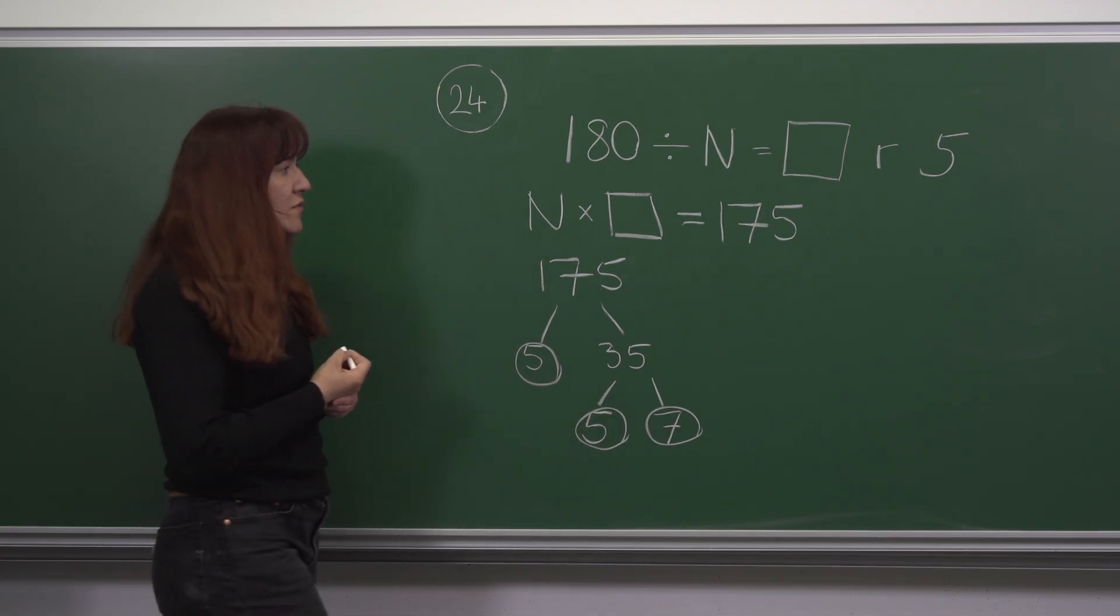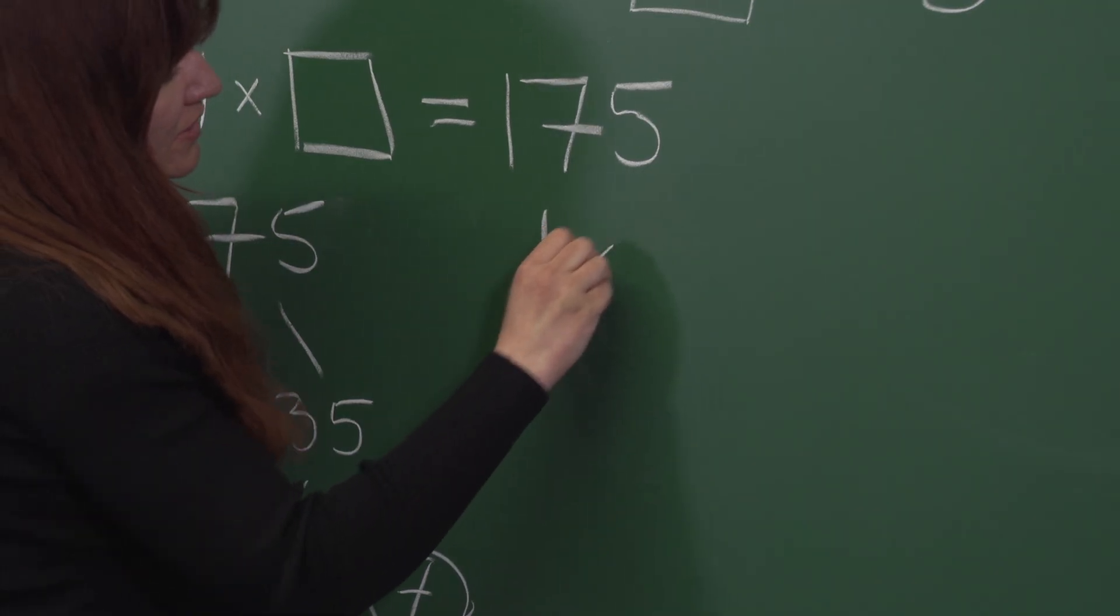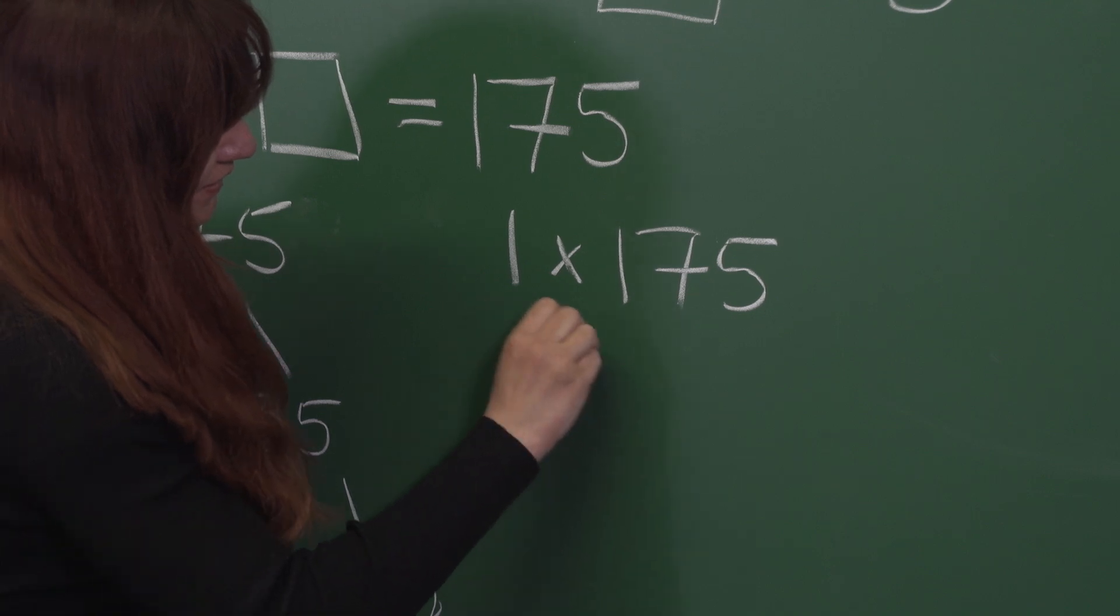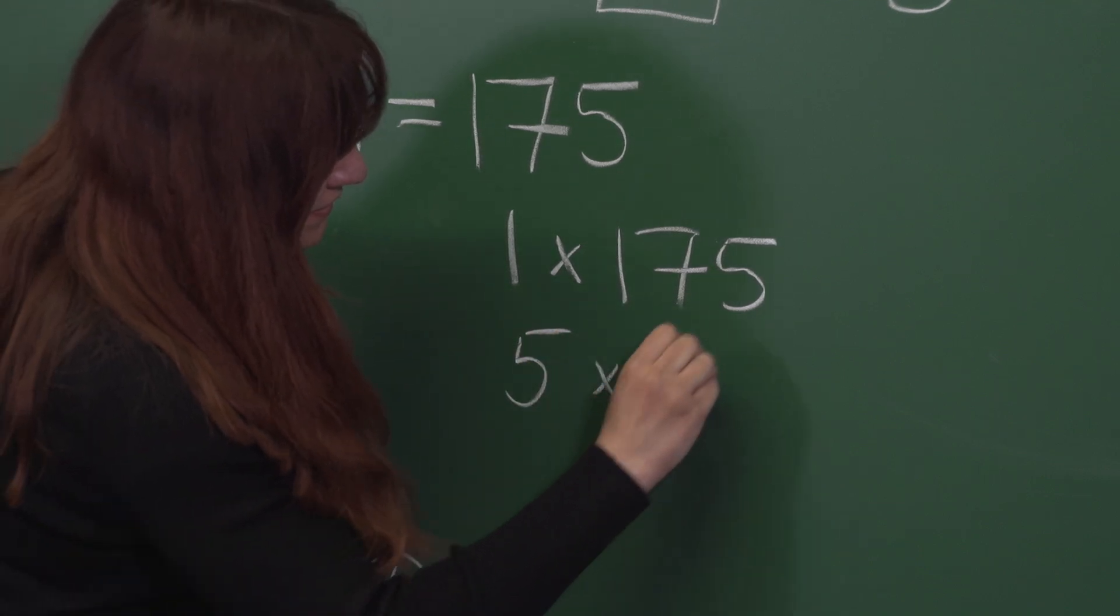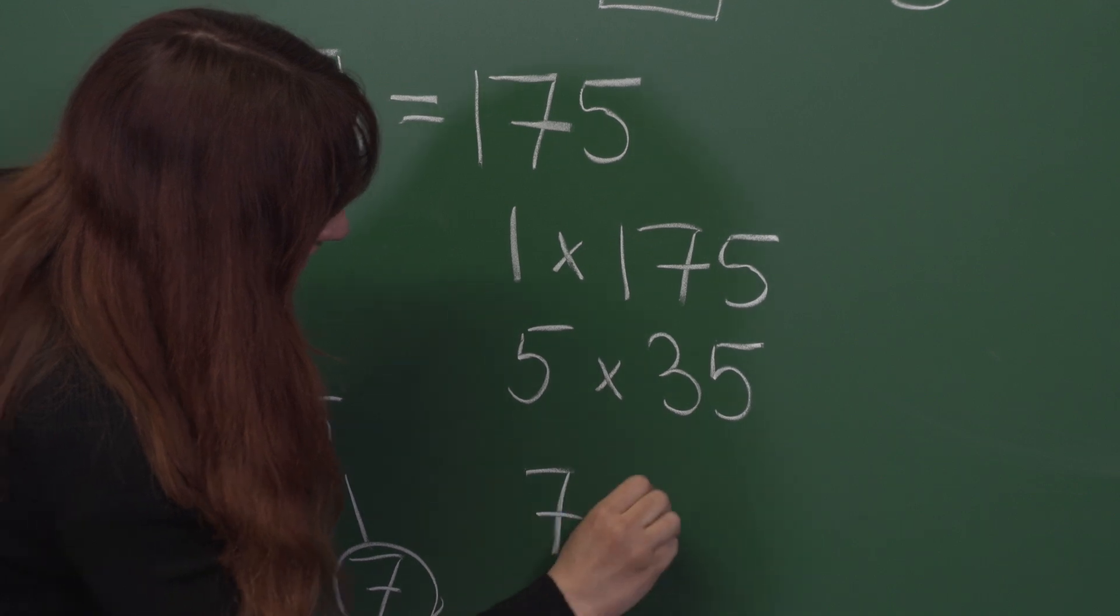Using the prime factors of 175, we can find that 175 can be written as 1 times 175, 5 times 35, and 7 times 25.